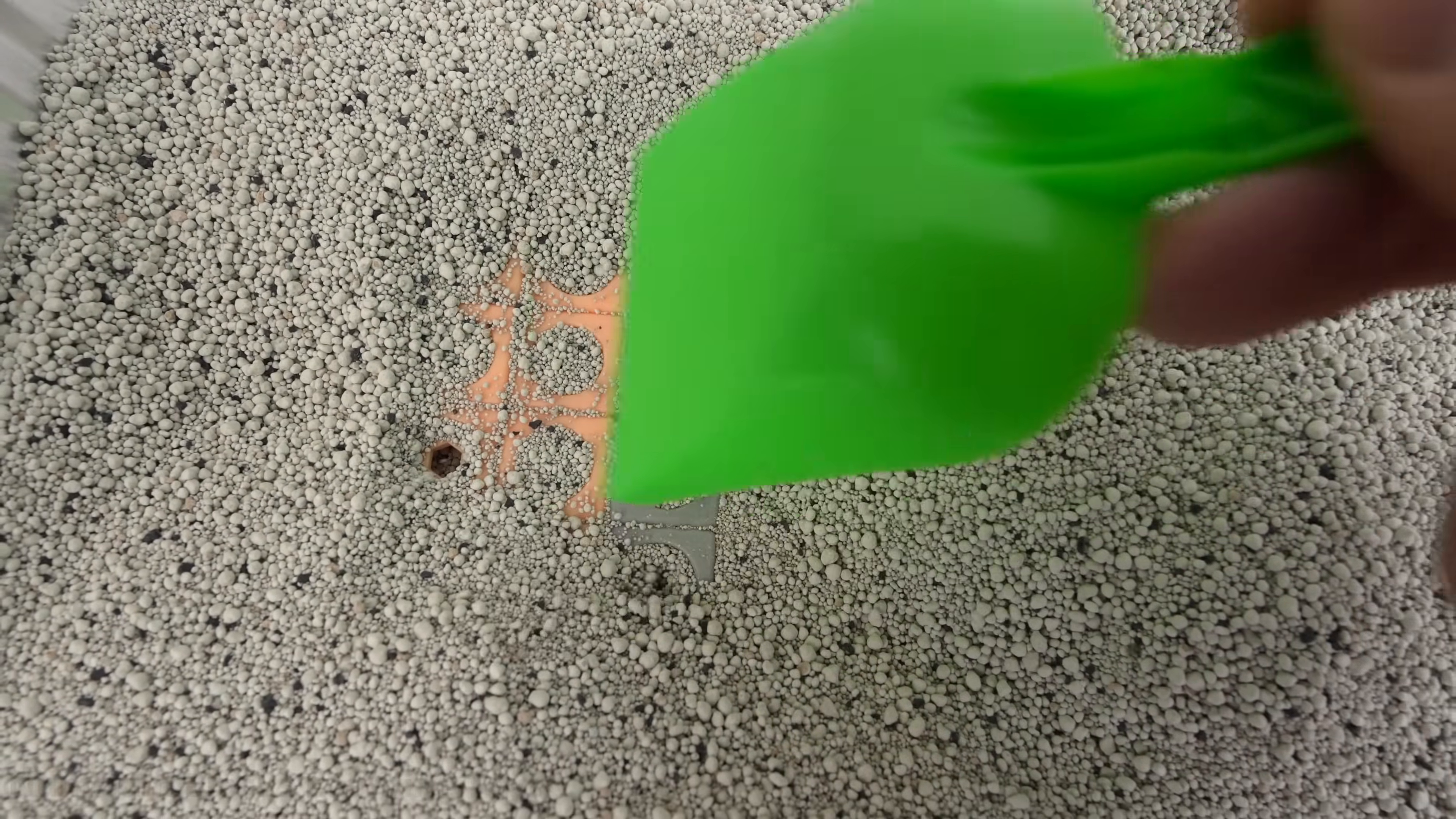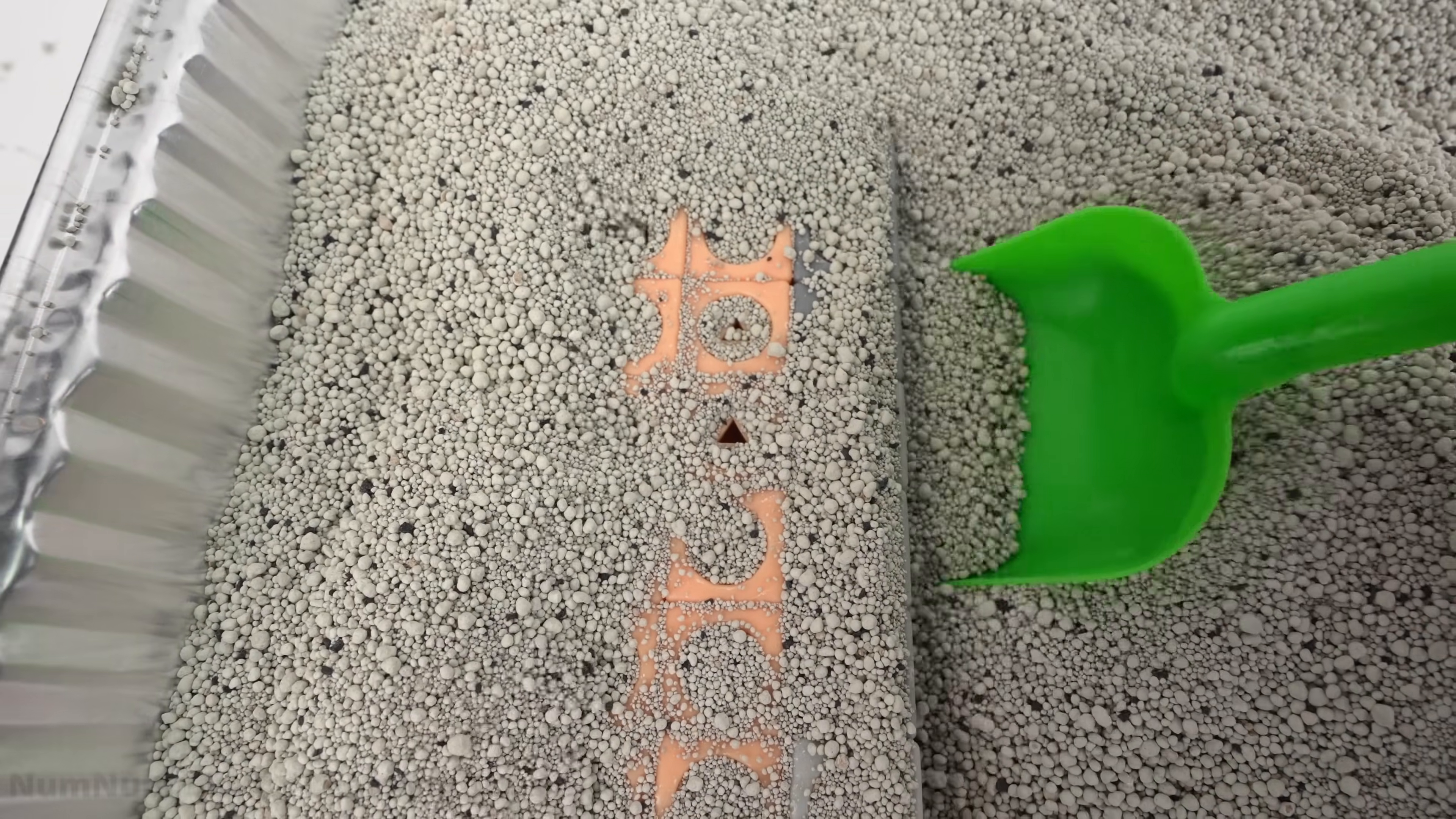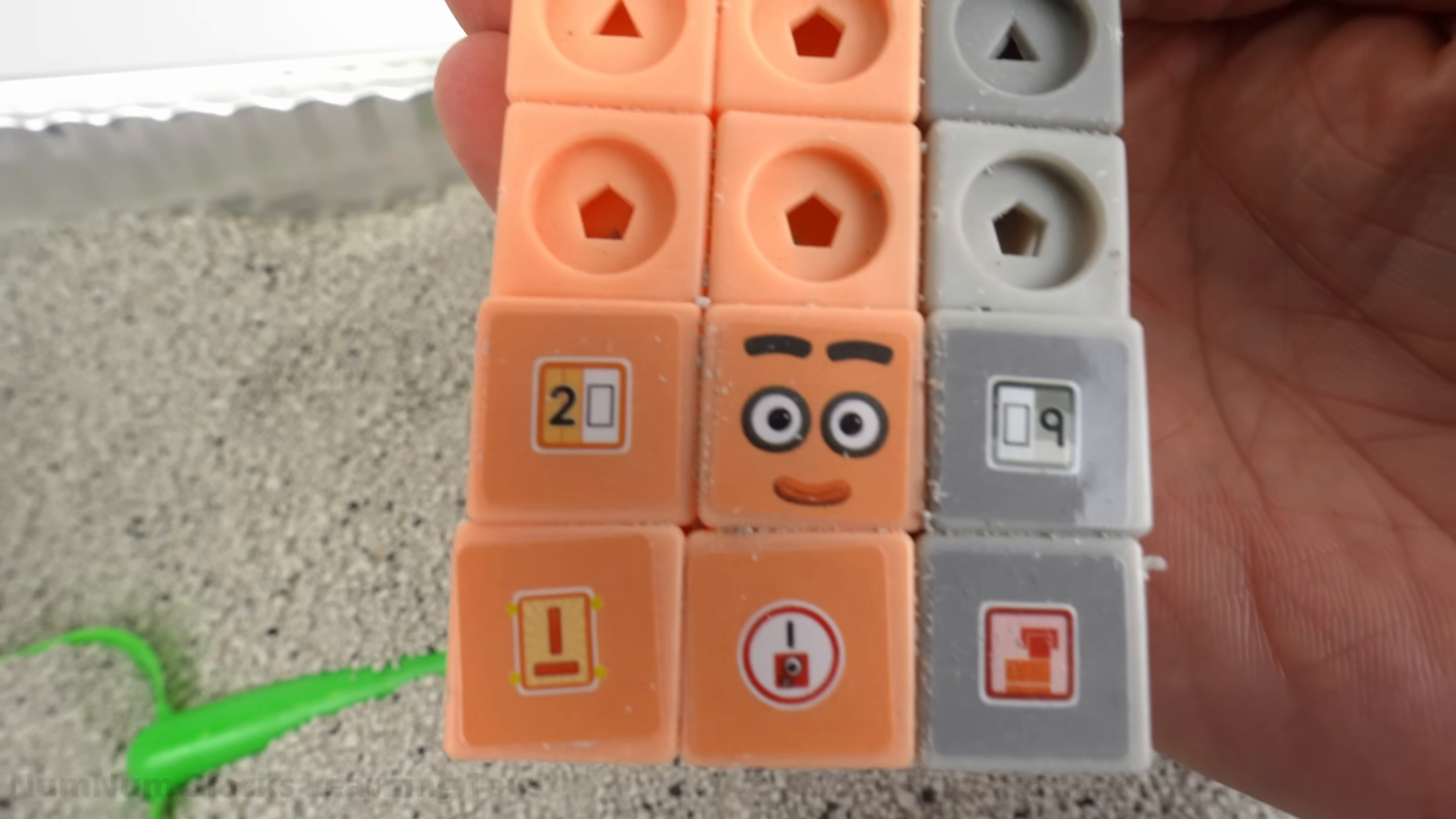Ooh, I found something here. I see gray colored blocks. It's 29. Let's get 29 out of there. I'm 29. Yay!